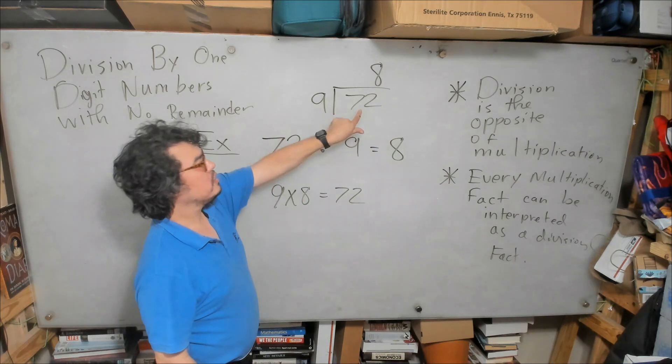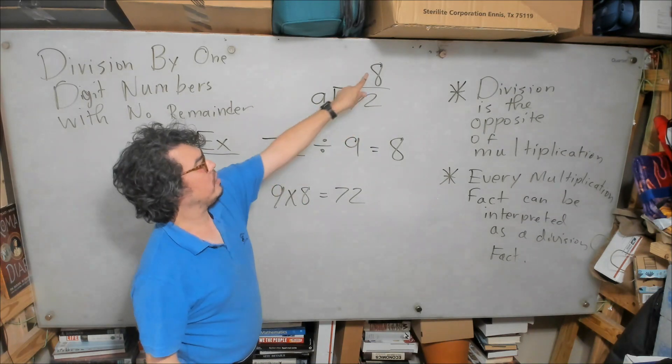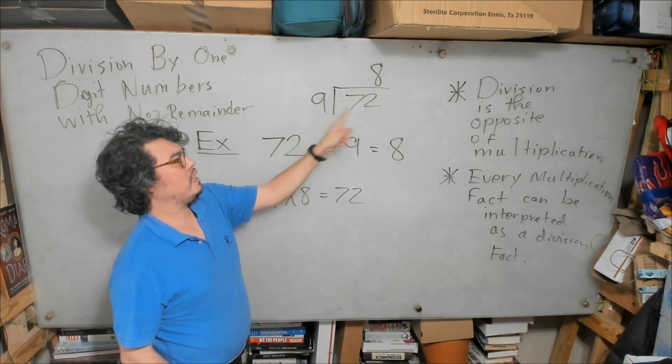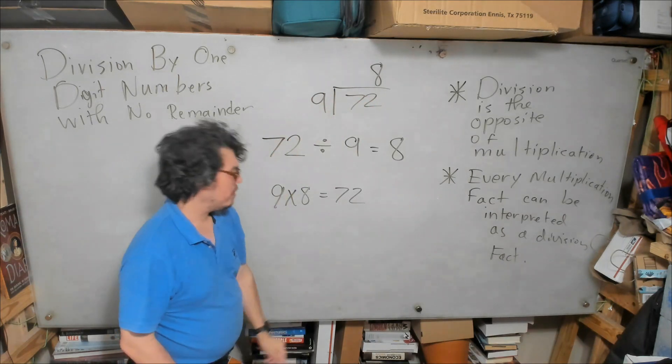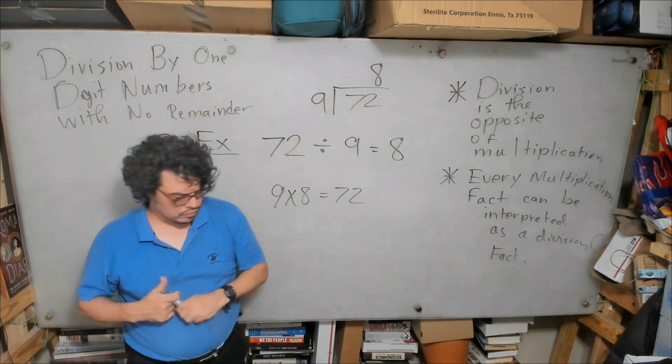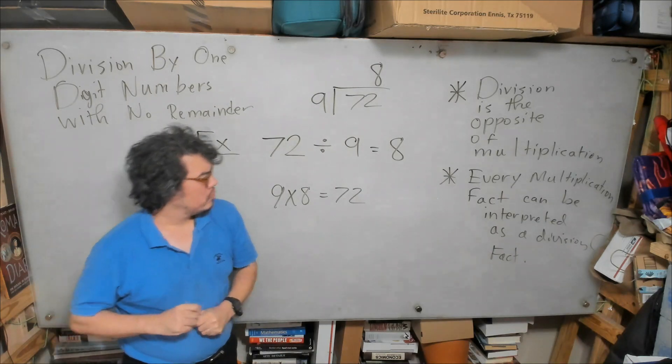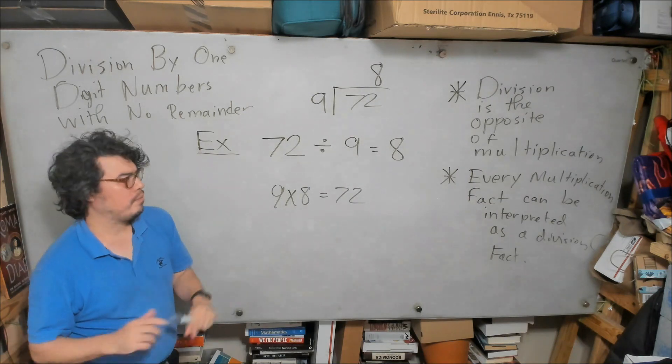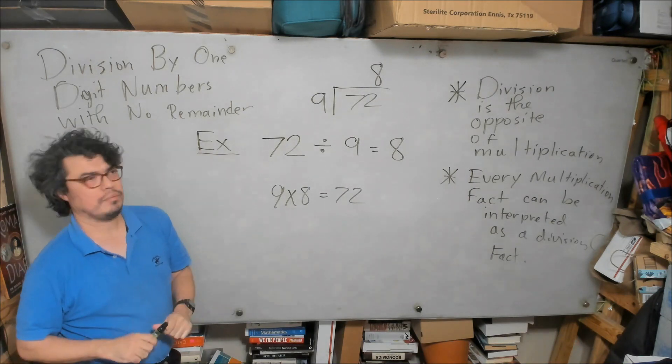72 divided by 9 is equal to 8. Why? Because 8 times 9 is 72. Now, before I let you guys go from this example, first we finish the example.